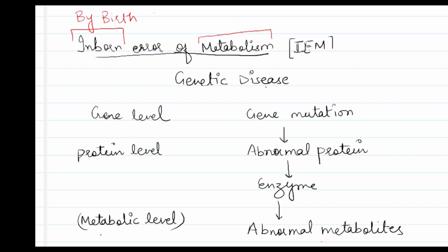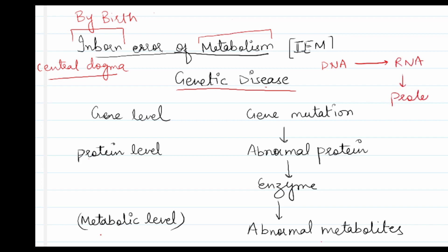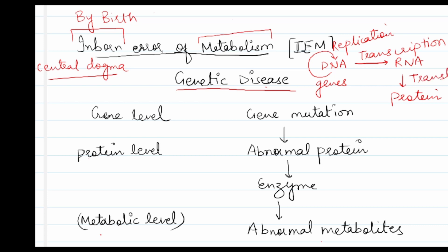So what are the inborn errors of metabolism? These are a group of inherited or congenital disorders — meaning these are genetic diseases that transfer from one generation to another. We know the central dogma of life: DNA is converted to RNA (transcription), and RNA is converted to protein (translation). If DNA is copied to DNA, that is called replication.